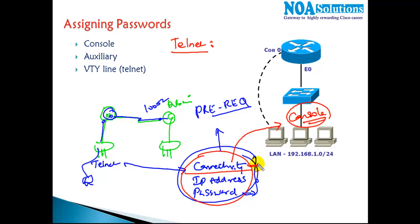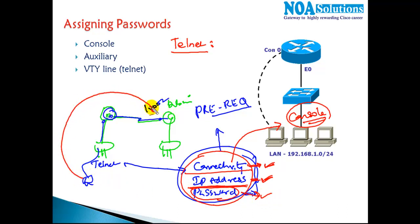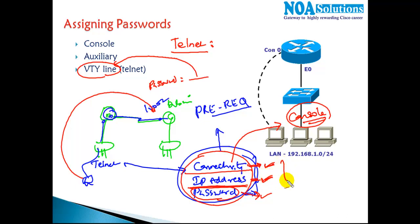These three prerequisites are required for Telnet access. Telnet is the most common way of accessing devices in production networks. The prerequisite configuration is done via the console — once I make the router up and running via console and set up connectivity, we will cover that in detail in later sessions, including IP address assignment rules. But right now, I'm going to show you how to configure the password so that if anyone accesses my remote device via Telnet, the router prompts for a password.